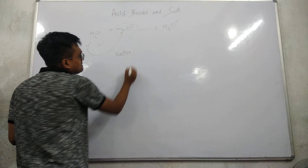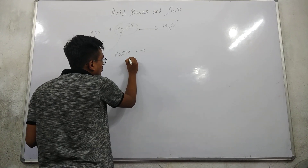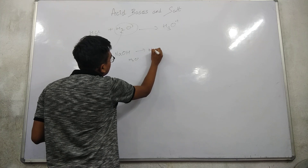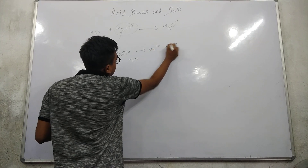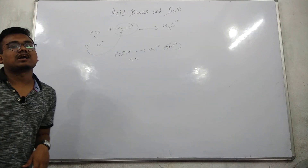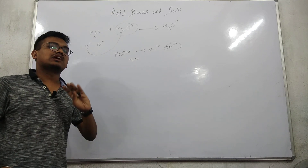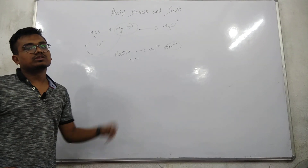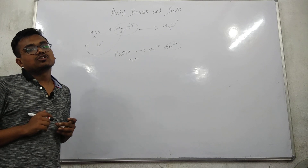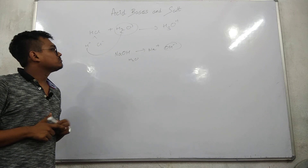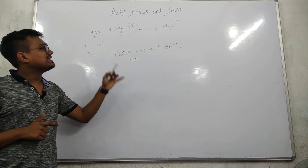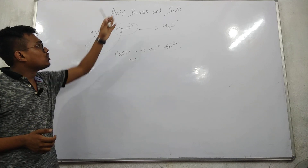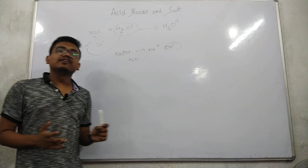So an alkali is a compound which, when dissolved in water, yields OH- as the only negatively charged ion. The only negative ion in this case will be OH-. Basically, alkalis are nothing but soluble bases.